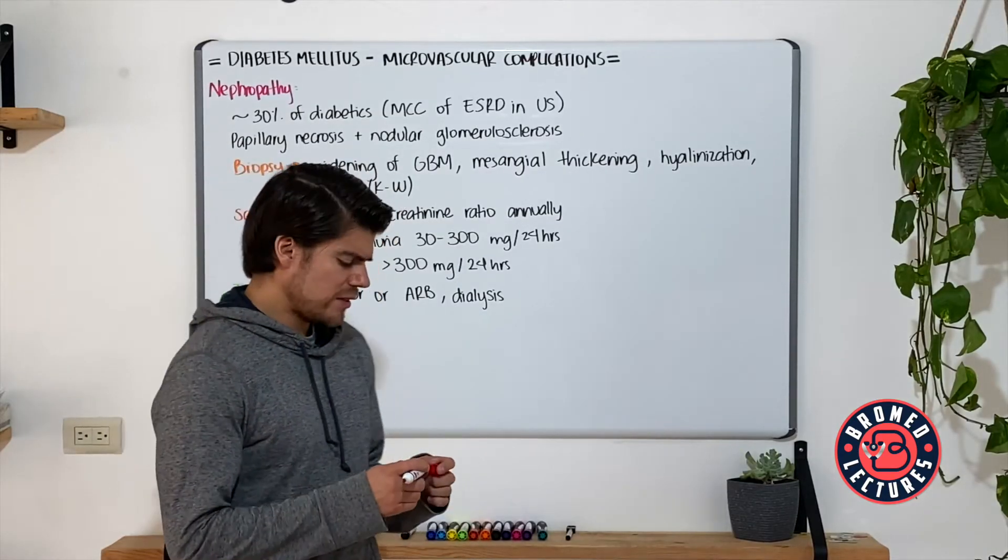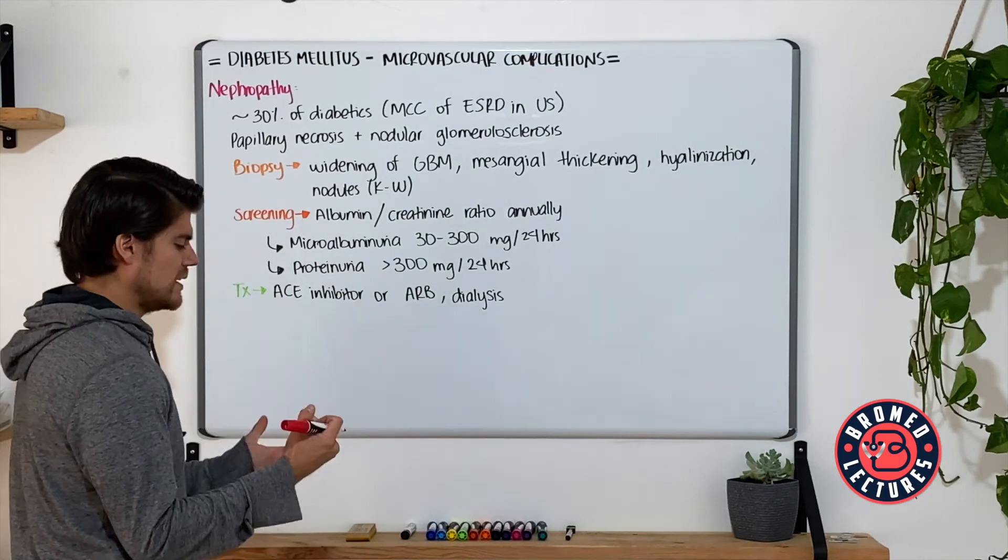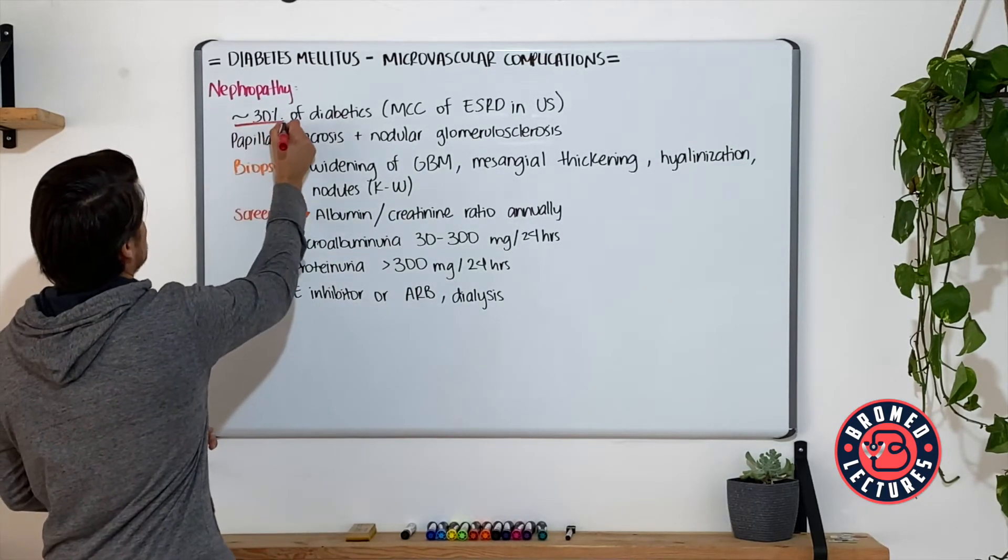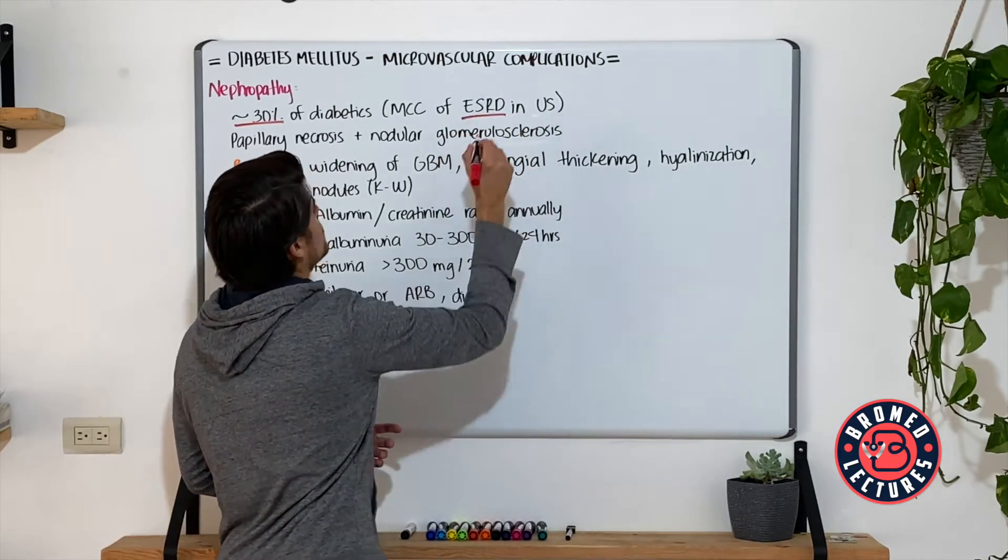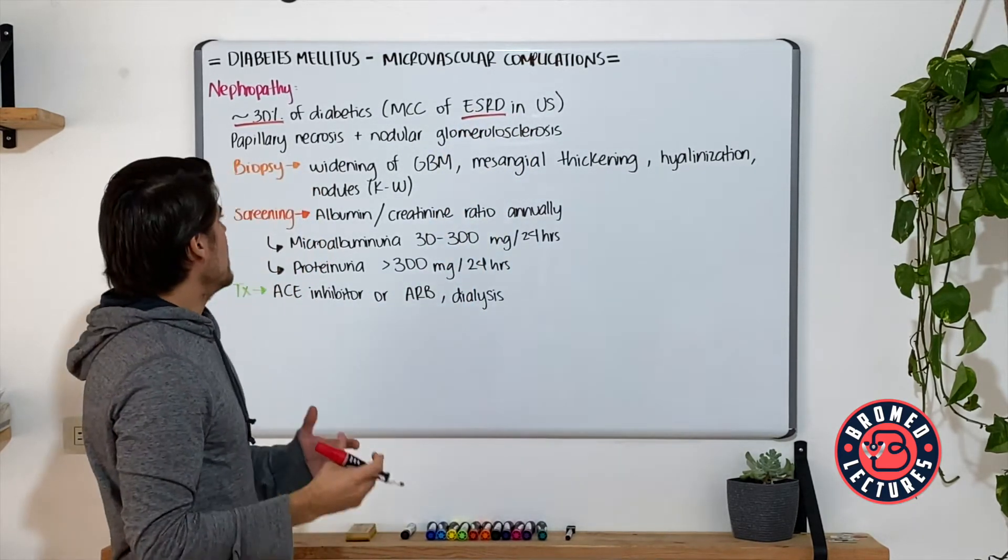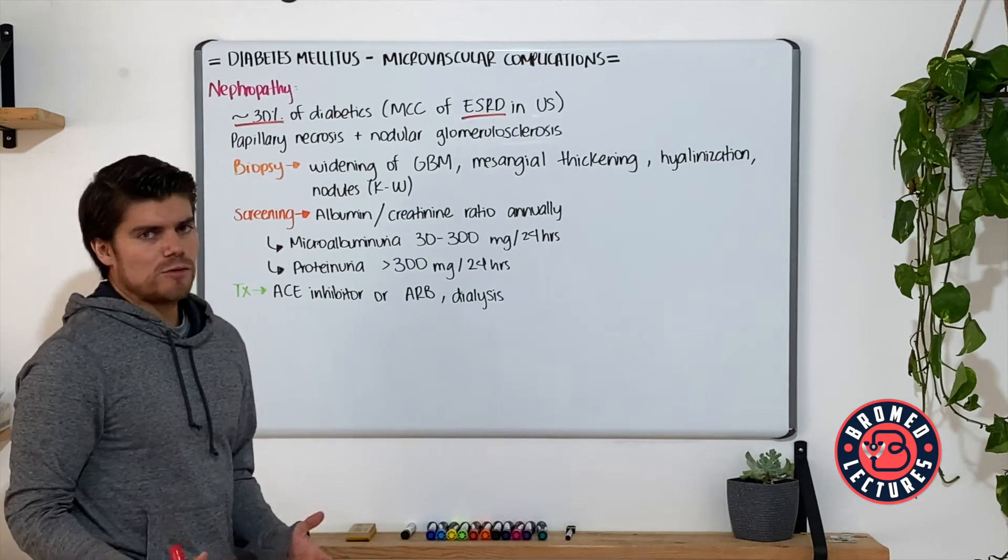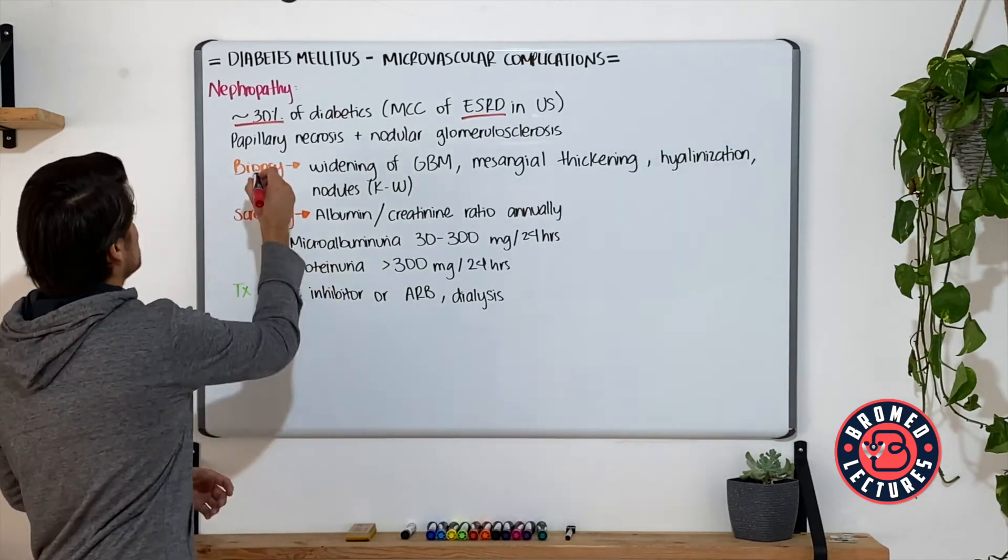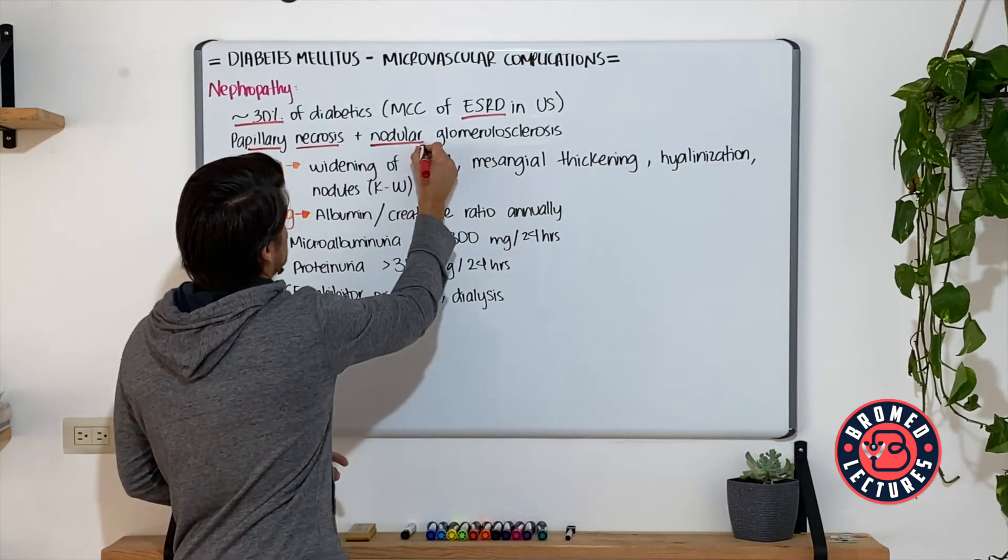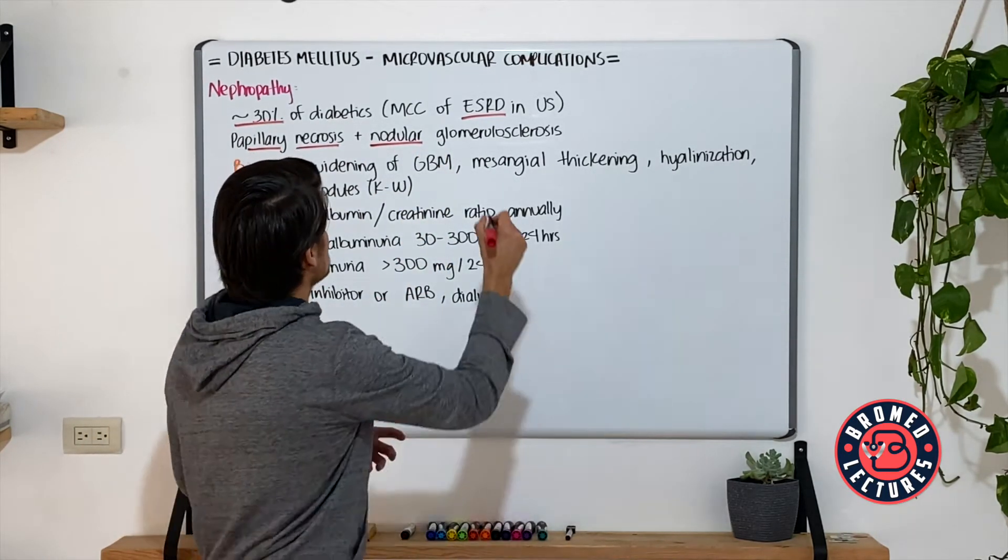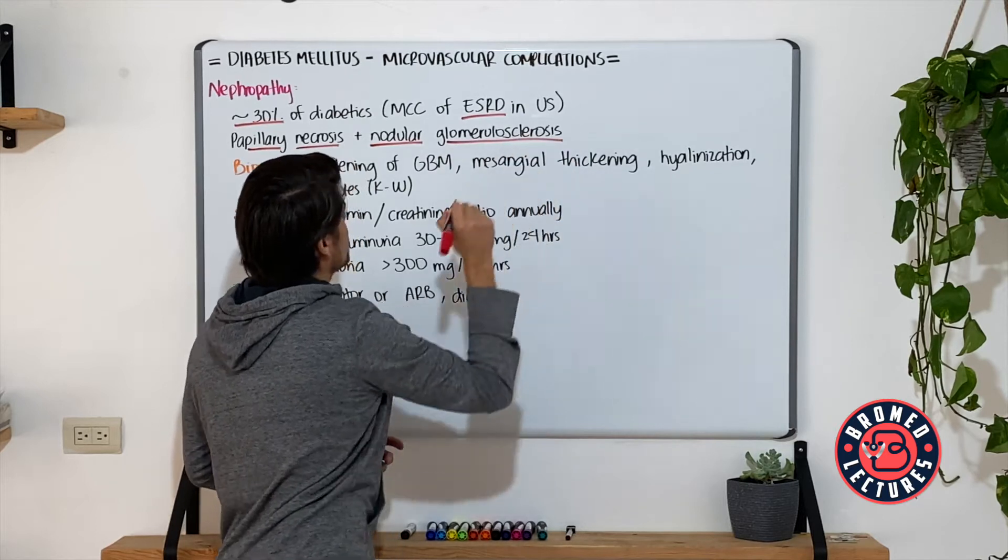Let's begin with nephropathy. This presents in around 30% of diabetic patients. It is the most common cause of end-stage renal disease in the United States. The microangiopathy unfolds as papillary necrosis, and the nodule deposition on the mesangium and basement membrane presents as nodular glomerular sclerosis.